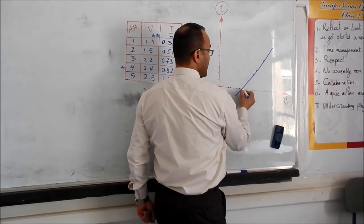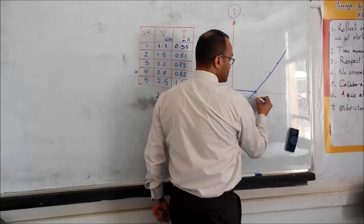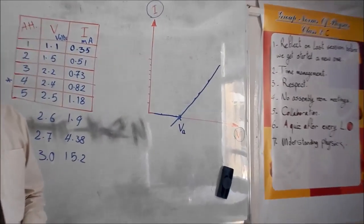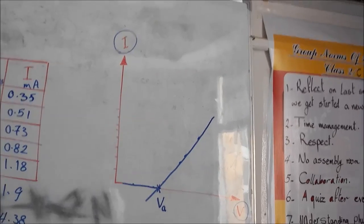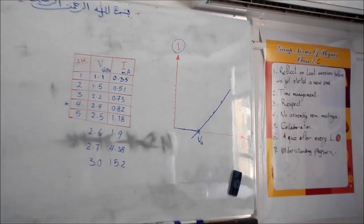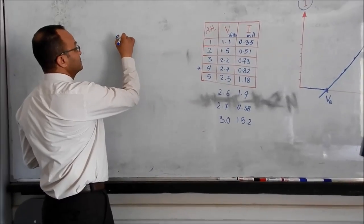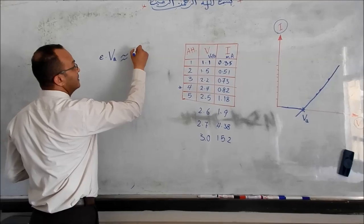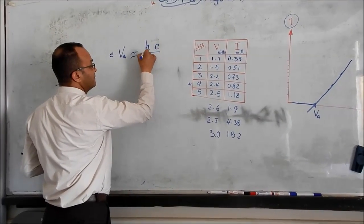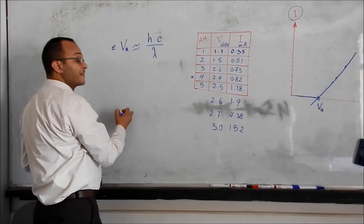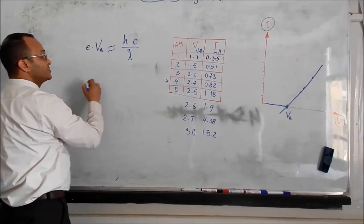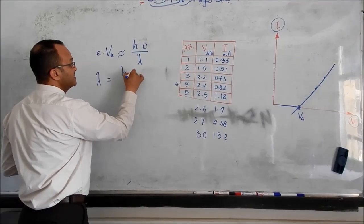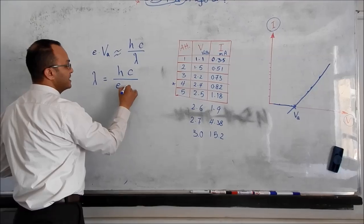To find out at which point the voltage started to increase the current. Don't forget the rule that we are going to use. We said that E times VA almost equals HC over lambda. If you determined the activation voltage, you can find lambda. Lambda will equal HC over E times VA.